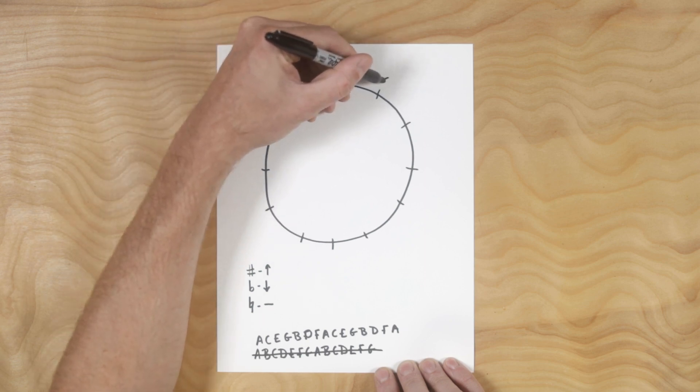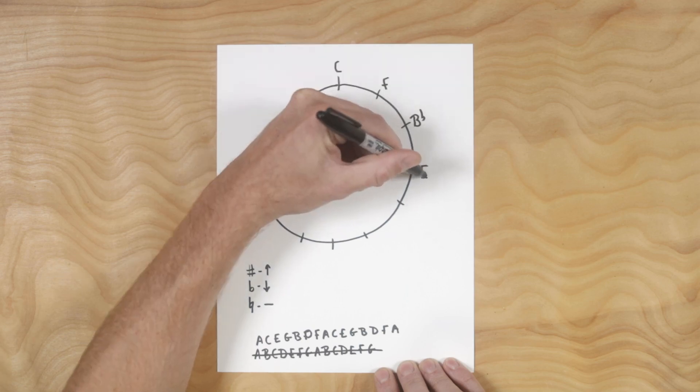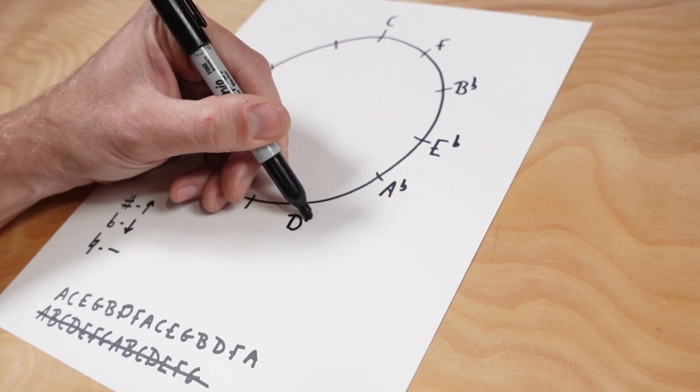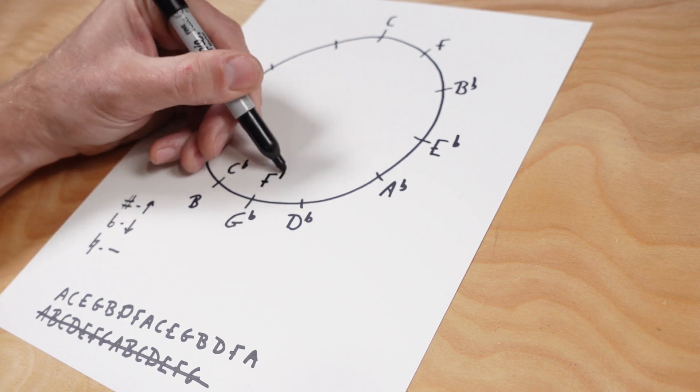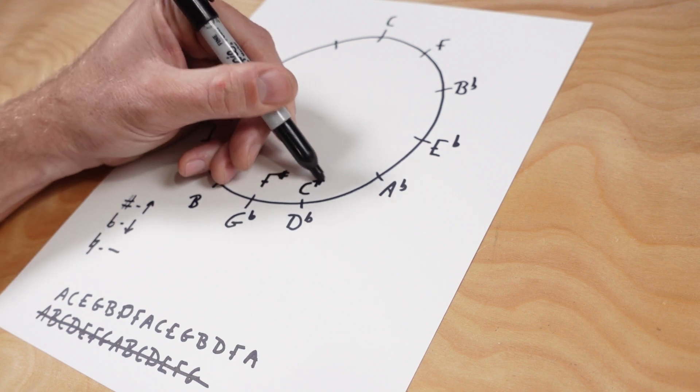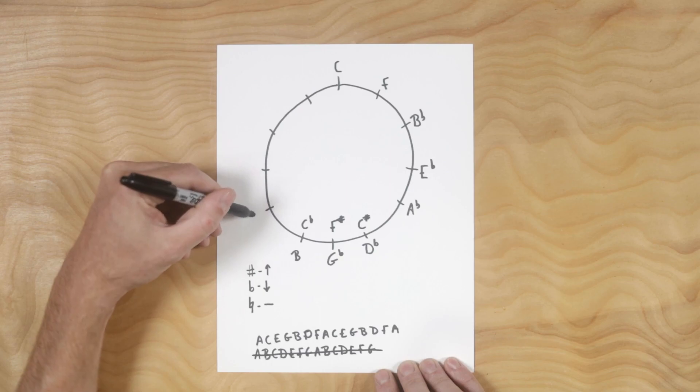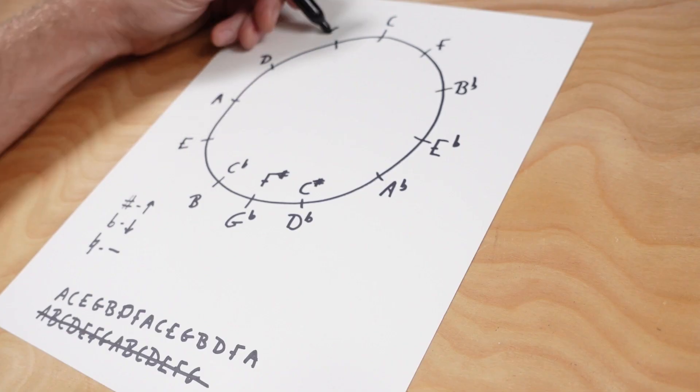The order of fourths is C F B flat, E flat, A flat, D flat, G flat, C flat here. We have B. This is F sharp. This is also C sharp. If you go the other way, it's the circle of fifths. Some people like that too. E A D G.